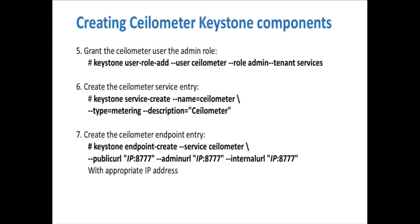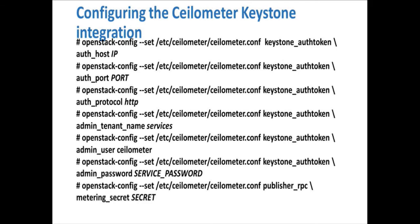As additional steps, just like any other service that you might add into the Keystone environment, setting up a service endpoint for Selometer itself — steps six and seven outline what you need to run in order to do that. Now that the Keystone components have been created, it's a step of letting Selometer know what those components are. This is really the net effect of all these commands: to go through and make appropriate changes to the Selometer.conf file and set the auth host as the Keystone host, auth port as the port that Keystone is listening on, protocol, the admin tenant name, the admin user that we just created in the previous example, the admin password, and the metering secret which we defined earlier. Once these commands have been run, the appropriate settings are in the Selometer.conf file.